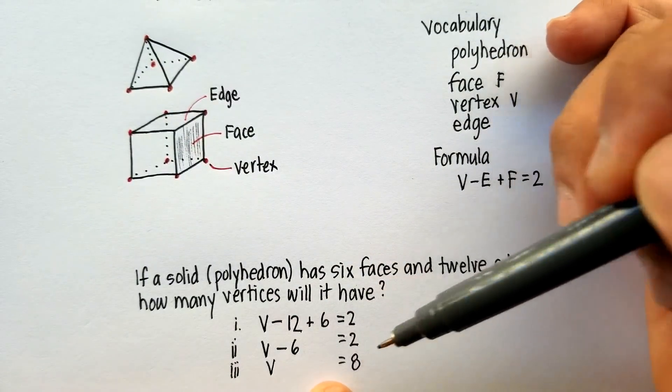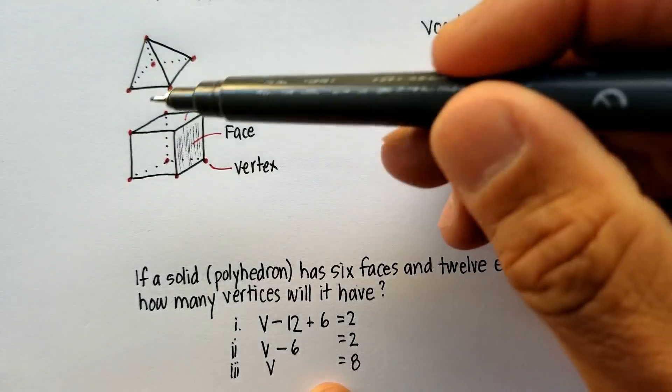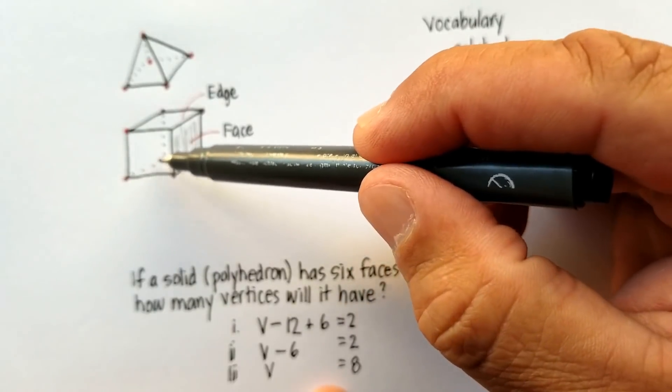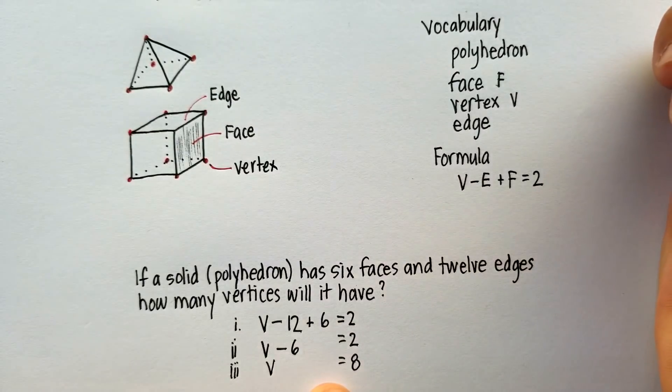Does it have eight vertices? Let's count. One, two, three, four, five, six, seven, eight. It actually does.